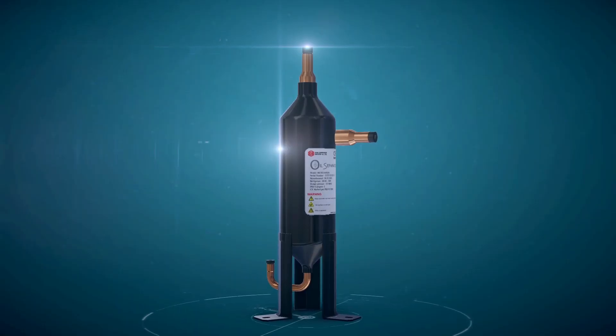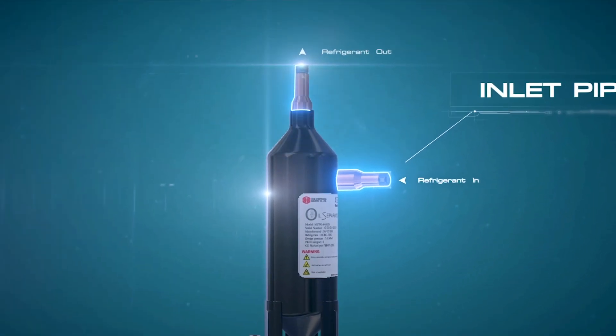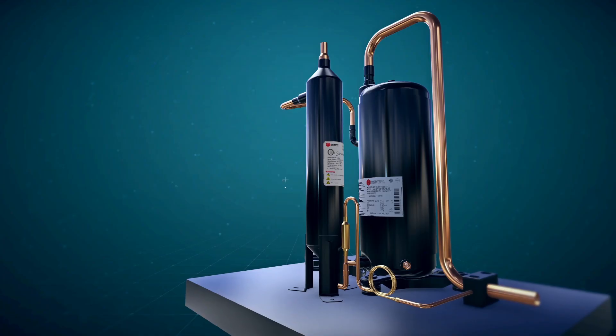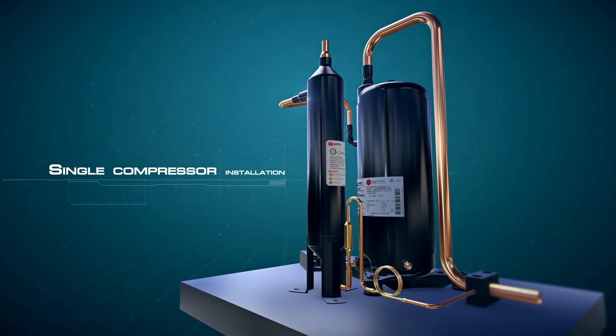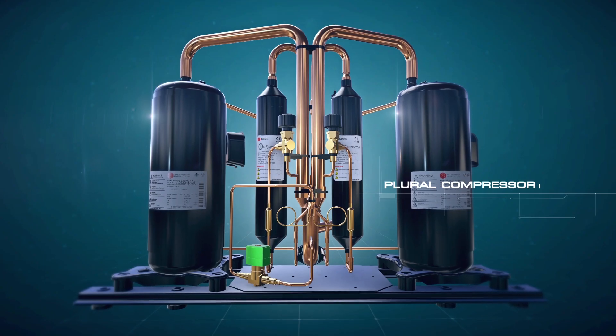The main components of the oil separator include inlet pipe, outlet pipe, and oil return pipe. The oil separator is compatible with both single and plural compressors.